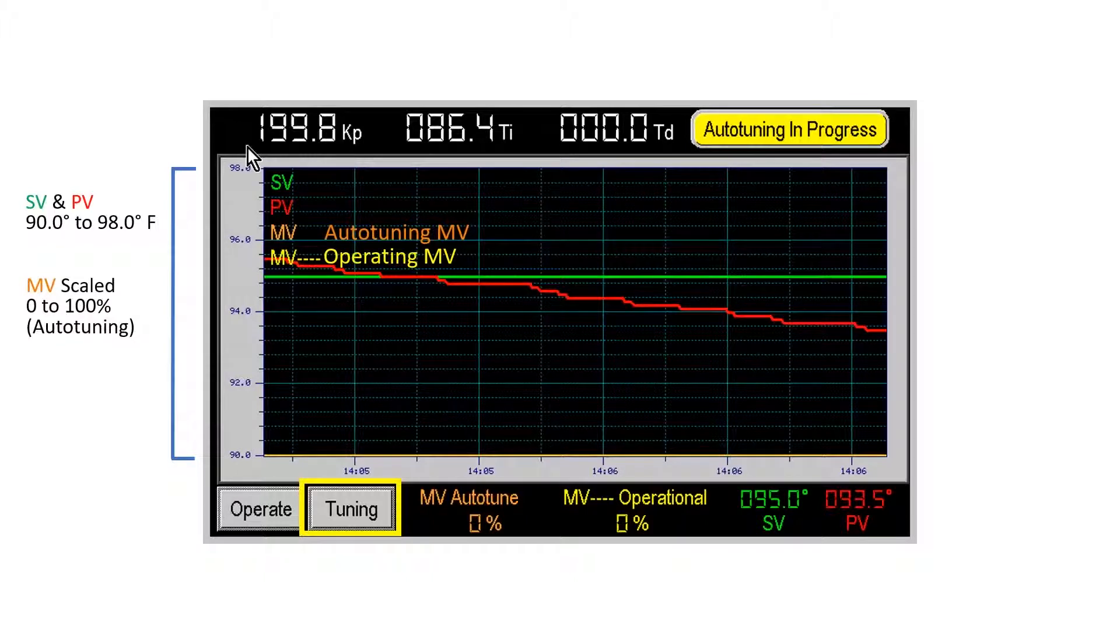The tuning screen has a trend graph with the same values as the first screen in addition to another MV output. The auto-tune MV is trended as well as the operational MV.